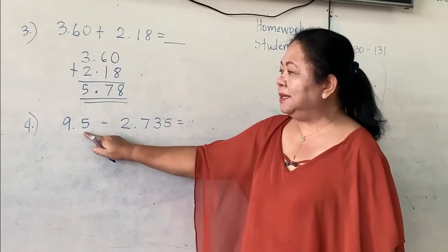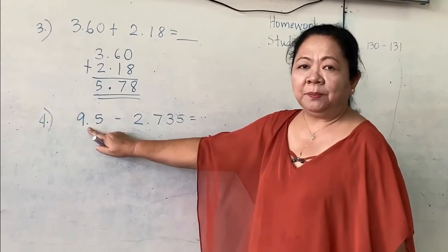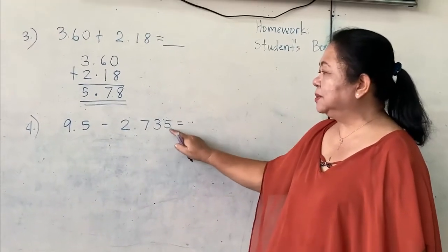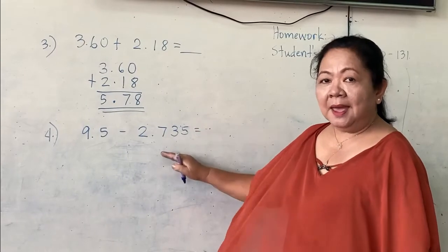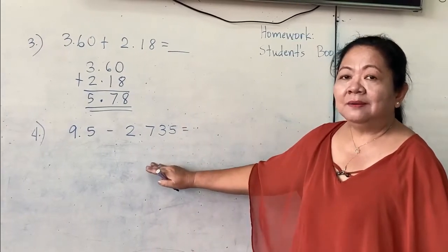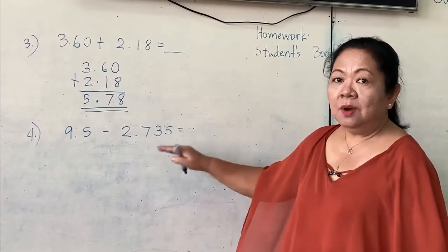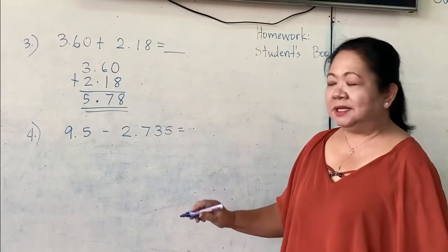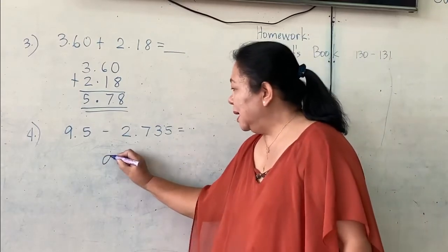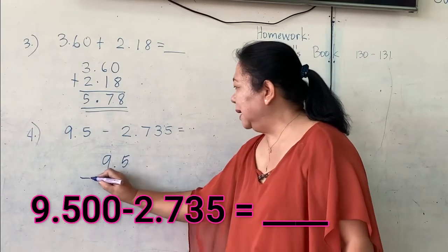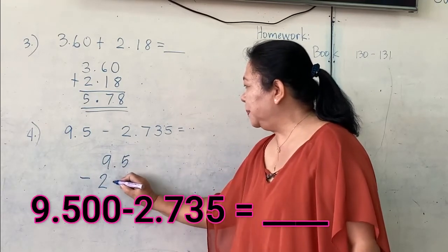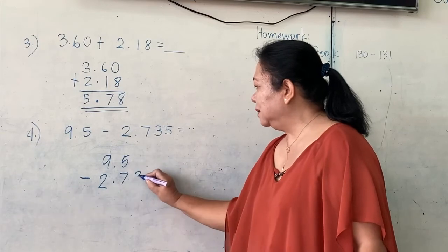Here, we have only one digit after the decimal point. But here, we have 1 to 3 digits after the decimal point. Again, you are allowed to write 0 to make the number of digits equal. But look, I have here 9.5 minus 2.735.